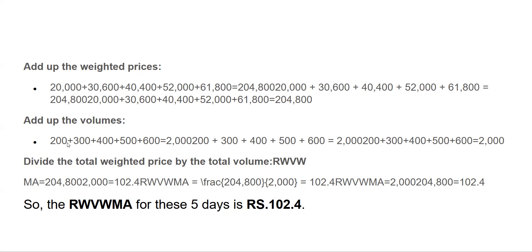You add up the volumes and add up the prices. Then you divide the total weighted average price by the total rolling weighted volume — that is Rolling Weighted Volume Weighted Average Price. So finally, for these 5 days, the rolling weighted volume weighted average price comes out to be 102.4.